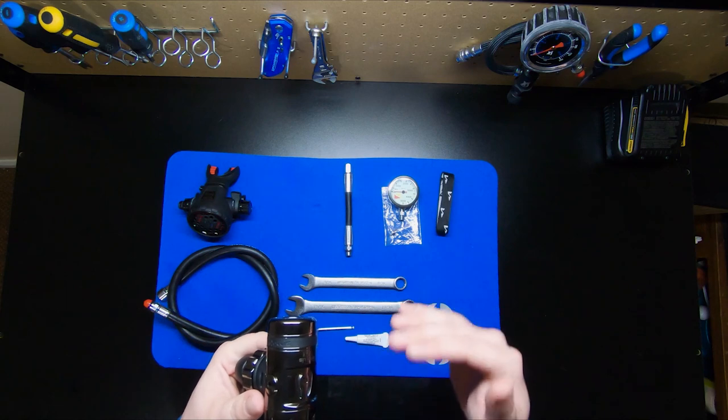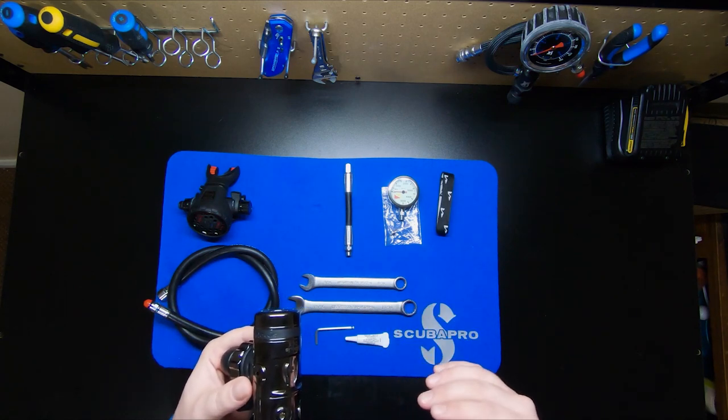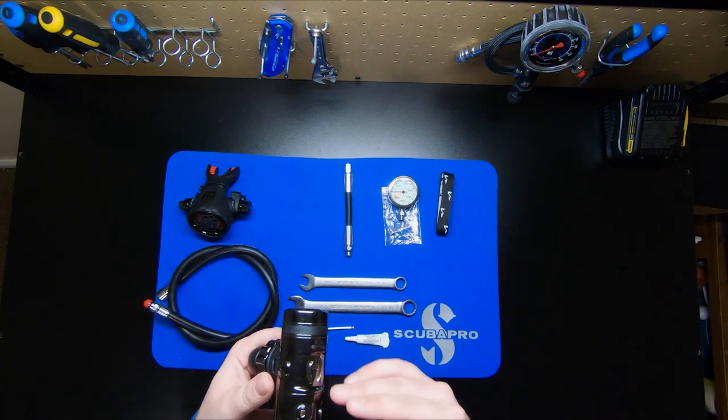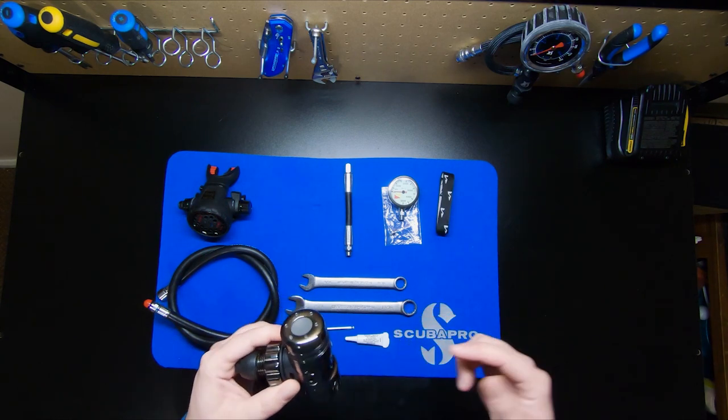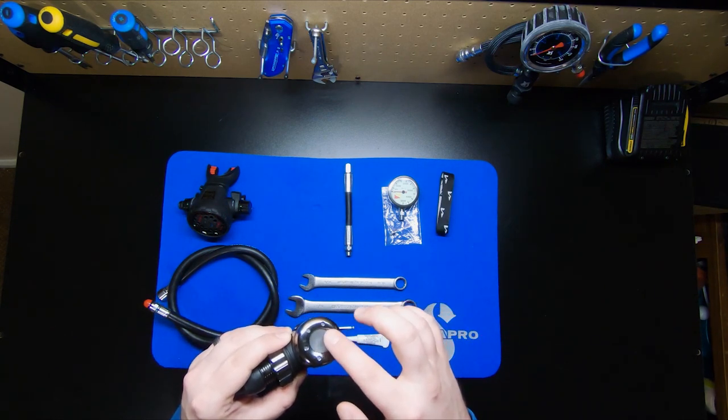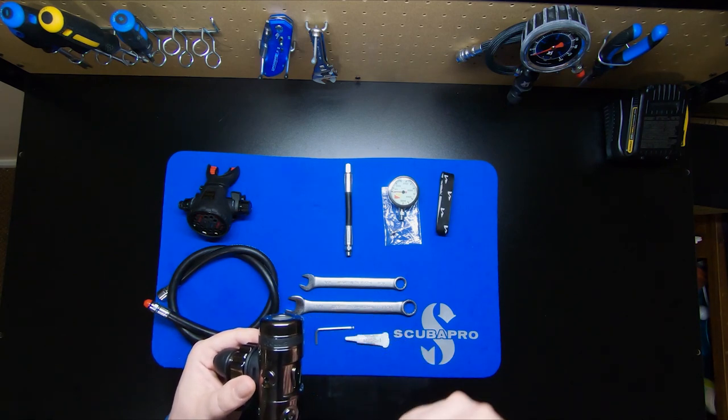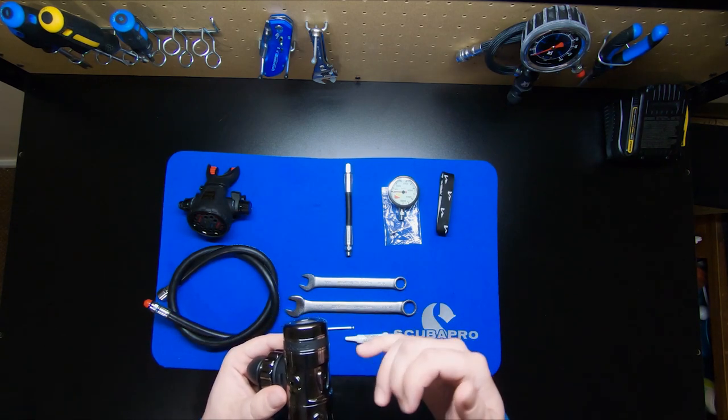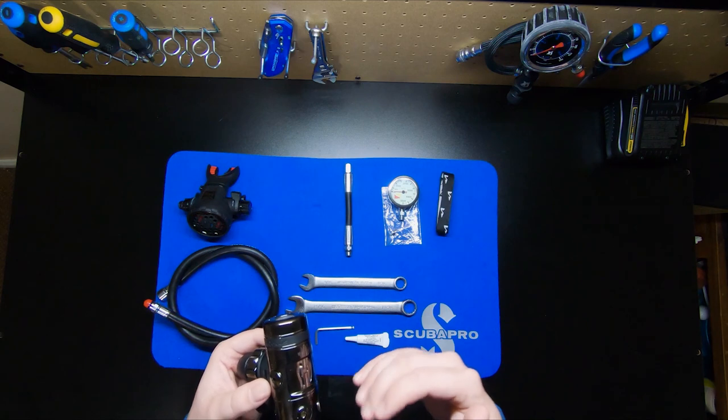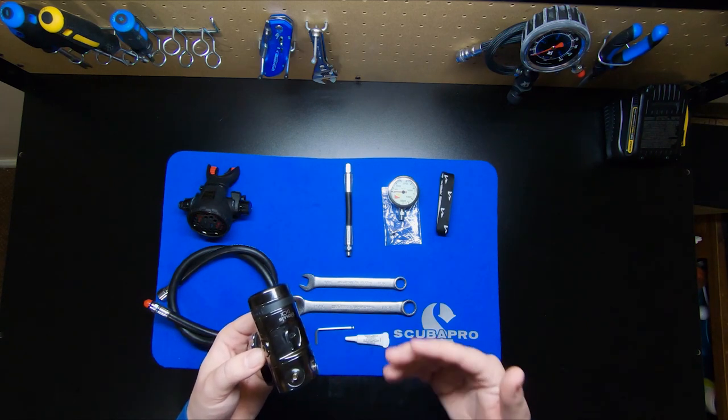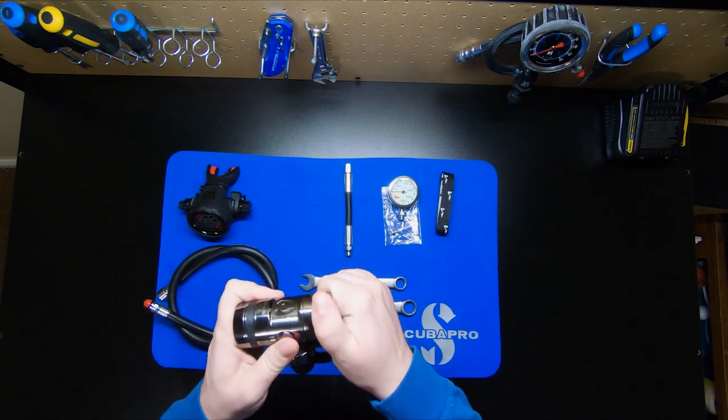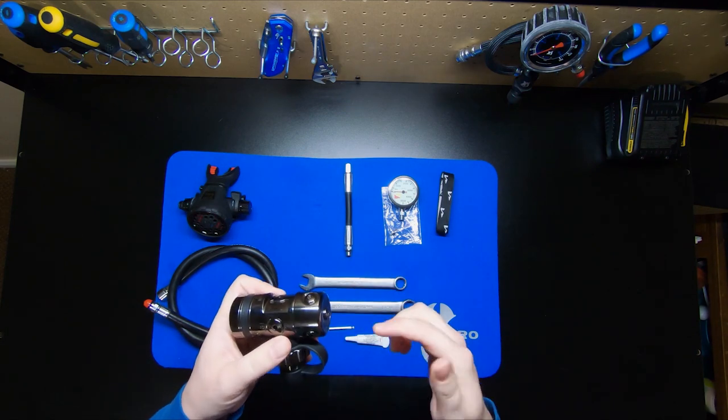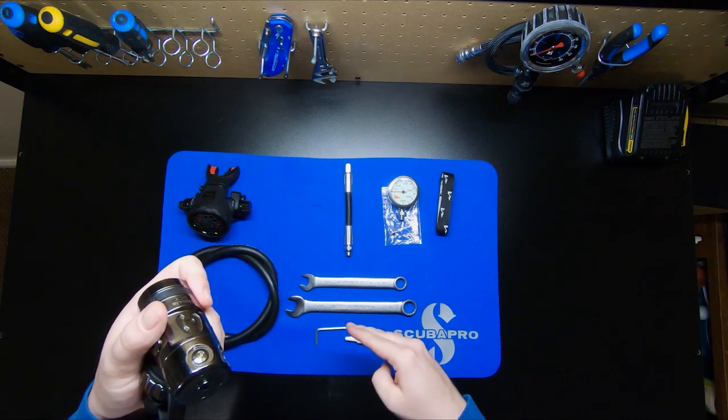A diaphragm style first stage has a lower internal pressure than a piston style first stage, which means that this is going to be very reliable for me in cold water applications. It has the environmental seal here at the top. So that's going to help keep ice from forming on the inside. It's also going to help keep salt water from getting into the first stage, helping cut down on corrosion and different things like that.